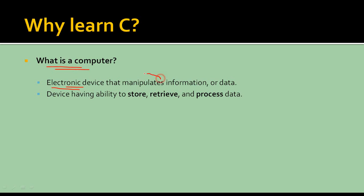A computer is an electronics device which manipulates — meaning it does certain work or processes on data and gives you a certain kind of output. That output we can call information. So an electronics device which manipulates information or data, and it can store values, retrieve values, or process values. Data is nothing but an unstructured form of values. The difference between data and information is that data is unprocessed values and information is processed values.